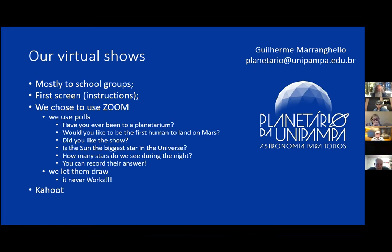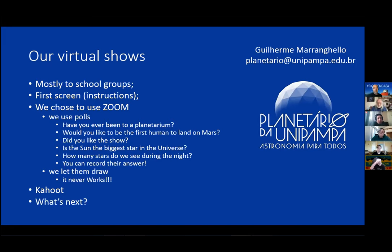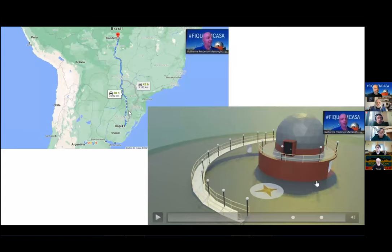If we don't have Zoom polls, we use Kahoot — it's a tool for questions and answers. We used that last year in a competition with the schools, and it's really nice as an additional option if you don't have the poll tool in Zoom. Every show also starts showing them where we are and where they are — we're doing shows all over the country. The first show I did this year was about 3,000 kilometers away from me, so we have a lot of fun talking about the differences in the sky.